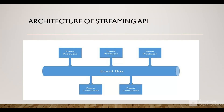Let's see the architecture of Streaming API. At the top, you can see there is the event producer. Event producers are those which create events and publish them onto a channel within Salesforce. Those events are stored in the event bus. All consumers of those events will subscribe to the event bus and check if there is any change. If yes, once subscribed to the channel, they'll receive notification that any changes to the record have been made.